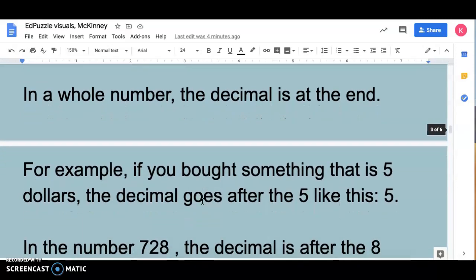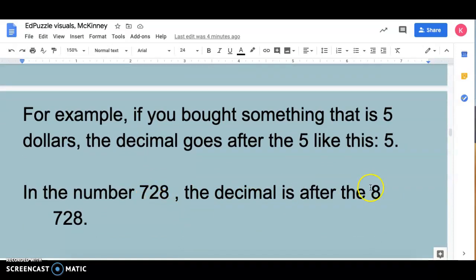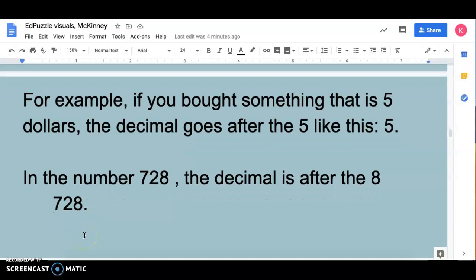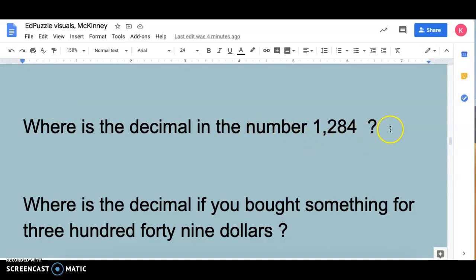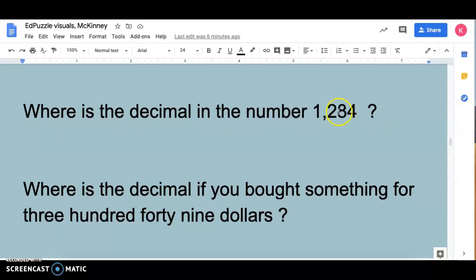So in a whole number, the decimal is at the end. If you buy something at the store and it's $5, then the decimal is going to go after the five and you might have zero cents over here. The whole number is $5 and the decimal goes afterwards. In the number 728, the decimal is going to be after the 8. So it's going to be 728 and then a decimal. This is going to be important later on, so you're welcome to write notes. So, where is the decimal in the number 1,284? Where is the decimal if you buy something for $349?